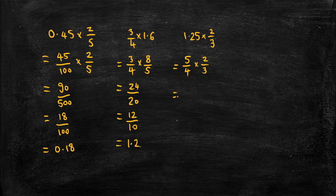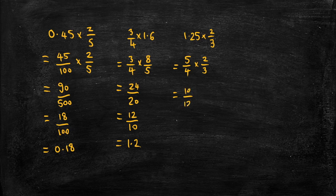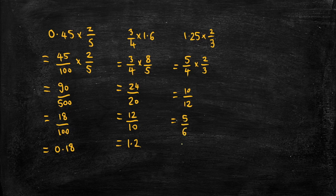Multiply the numerators to get 10. Multiply the denominators to get 12. And then simplify to get 5 over 6.